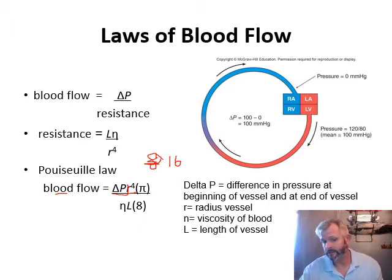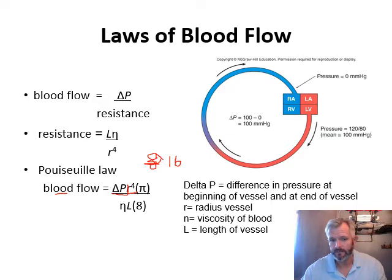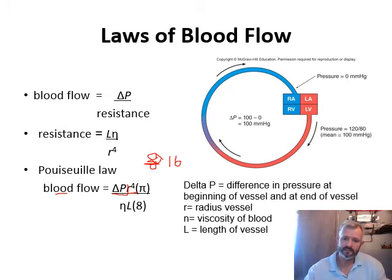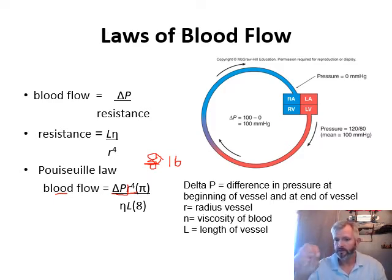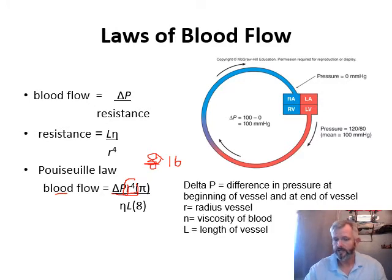Other factors that decrease flow: viscosity of the blood — if blood becomes more viscous, say you're dehydrated, it slows flow. Also, the length of the vessel: the longer the vessel, the slower the flow. But we don't change vessel lengths greatly, and viscosity only changes significantly in dehydration. We can change pressure by how forcefully the heart pumps. But where we really control blood flow is by controlling the radius of the vessel — we can change it greatly and exponentially, by controlling vasoconstriction and vasodilation.